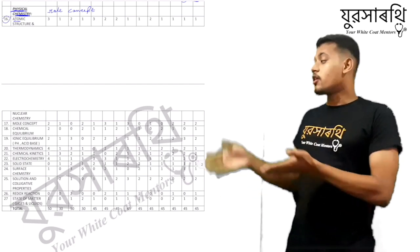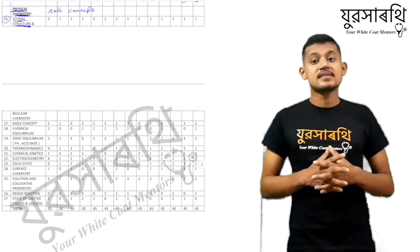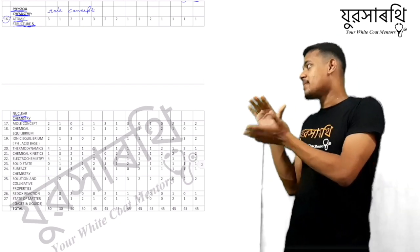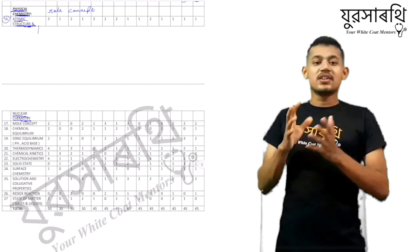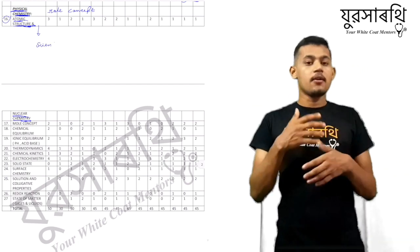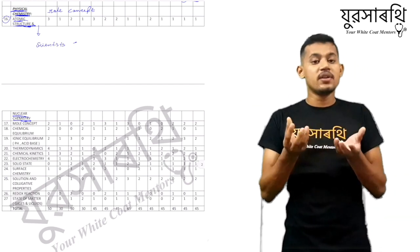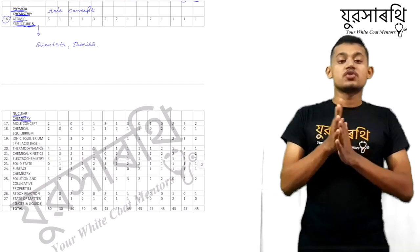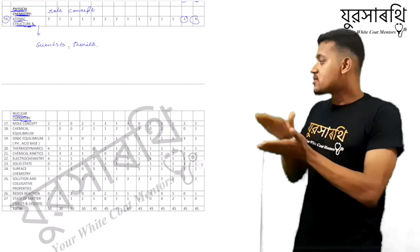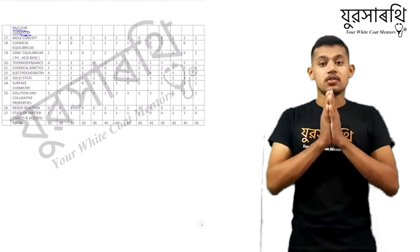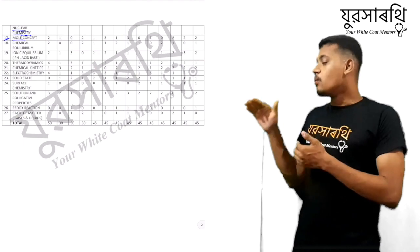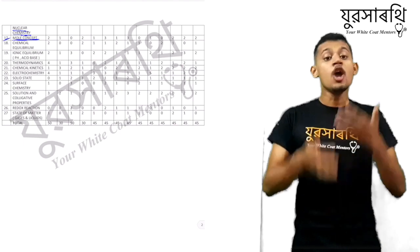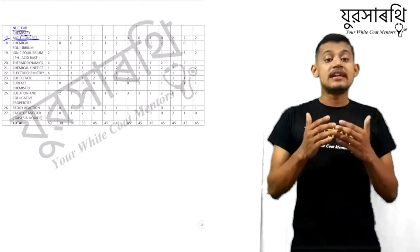In physical chemistry, on the top of the list we have atomic structure and nuclear chemistry. It revolves around theories given by many scientists and a few concepts. They ask one question every year from this topic. Next on the list we have mole concept — the soul of physical chemistry. Without learning the mole concept, we cannot learn physical chemistry.